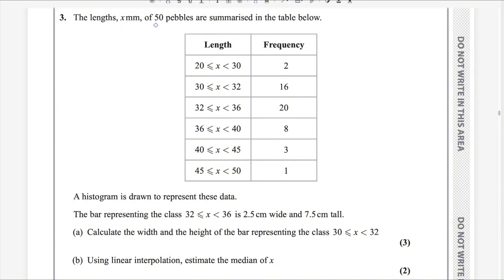The length x millimeters of 50 pebbles are summarized in the table below. A histogram is drawn to represent this data. The bar representing the class 32 to 36 is 2.5 centimeters wide and 7.5 centimeters tall. This is the width of that bar and this is the height of that bar. Calculate the width and height of the bar representing the class 30 to 32.